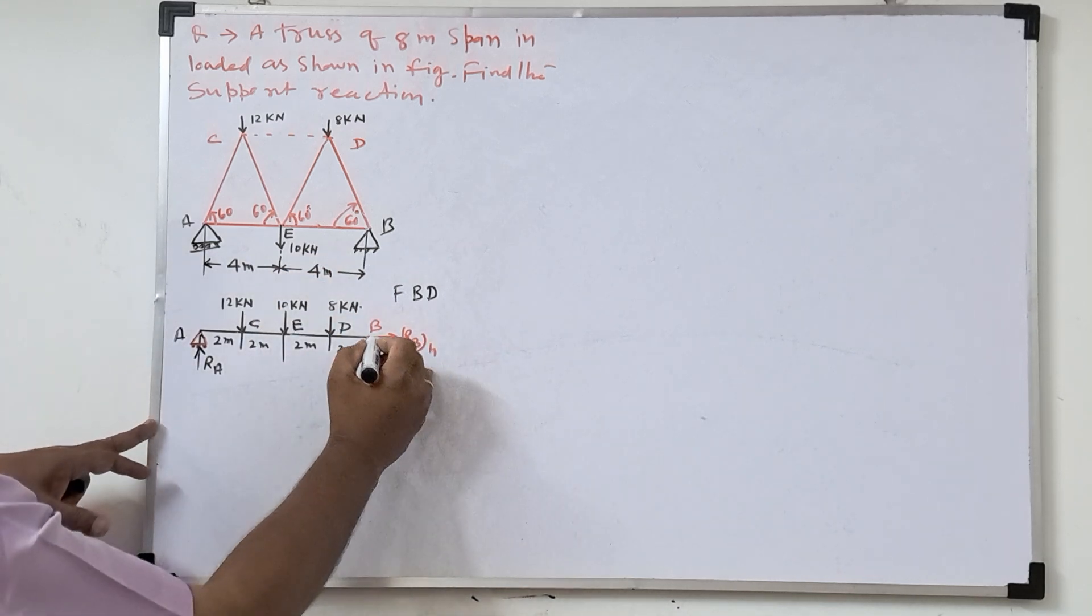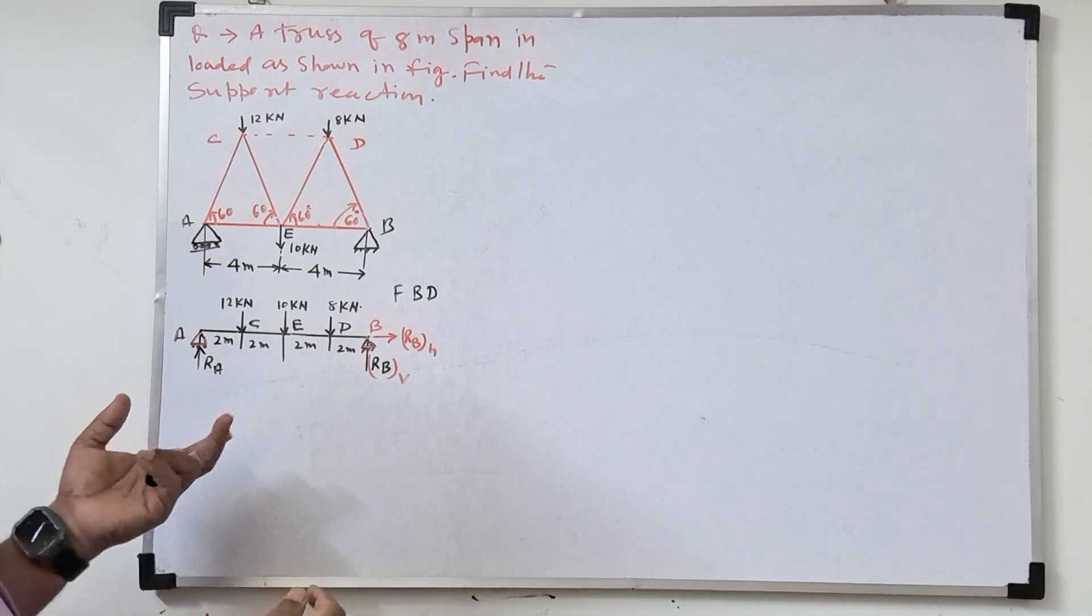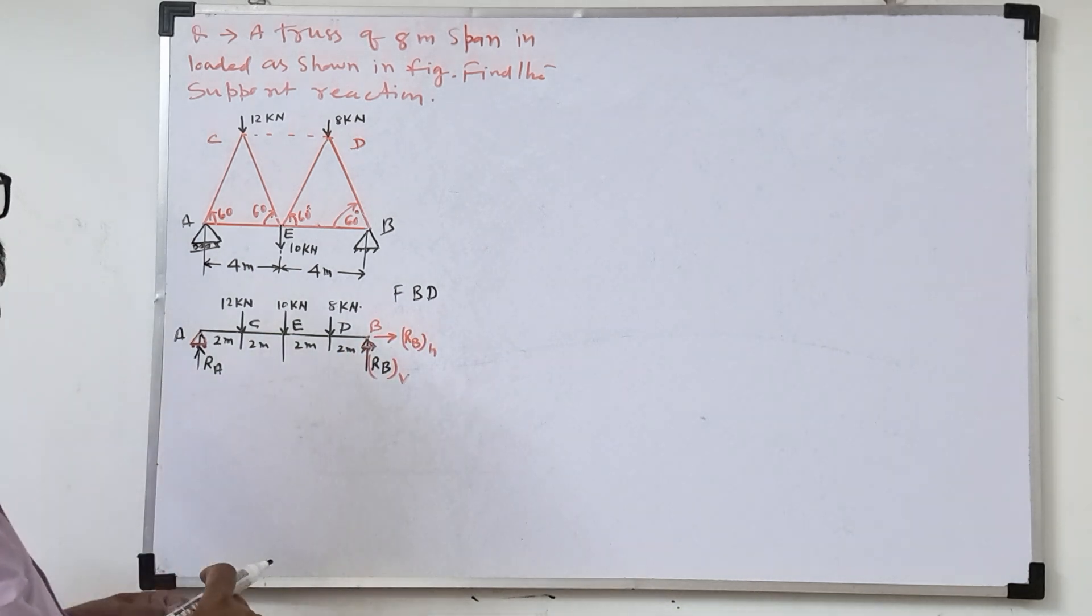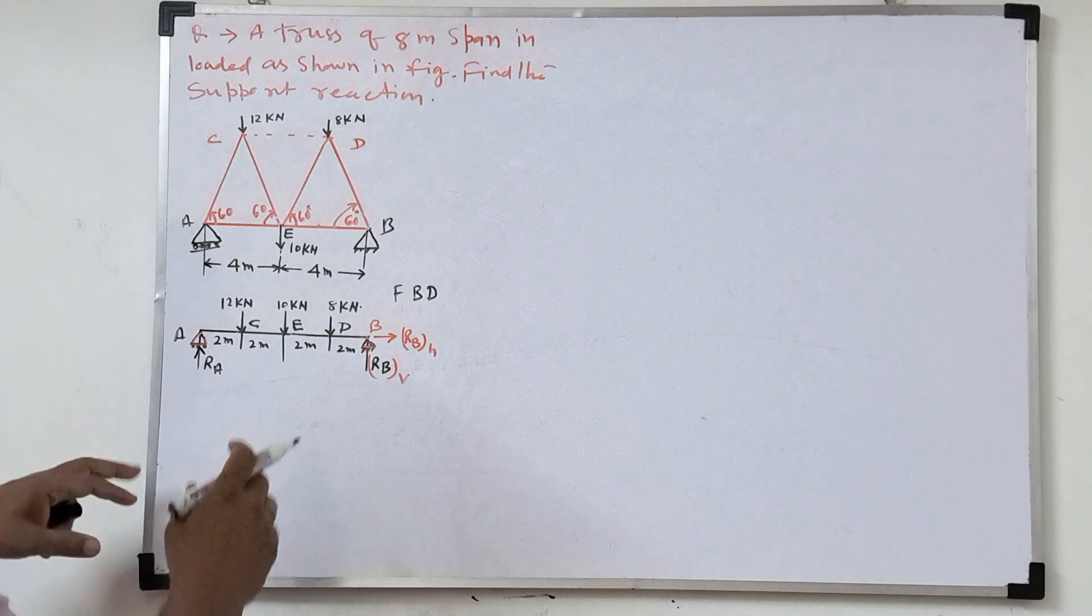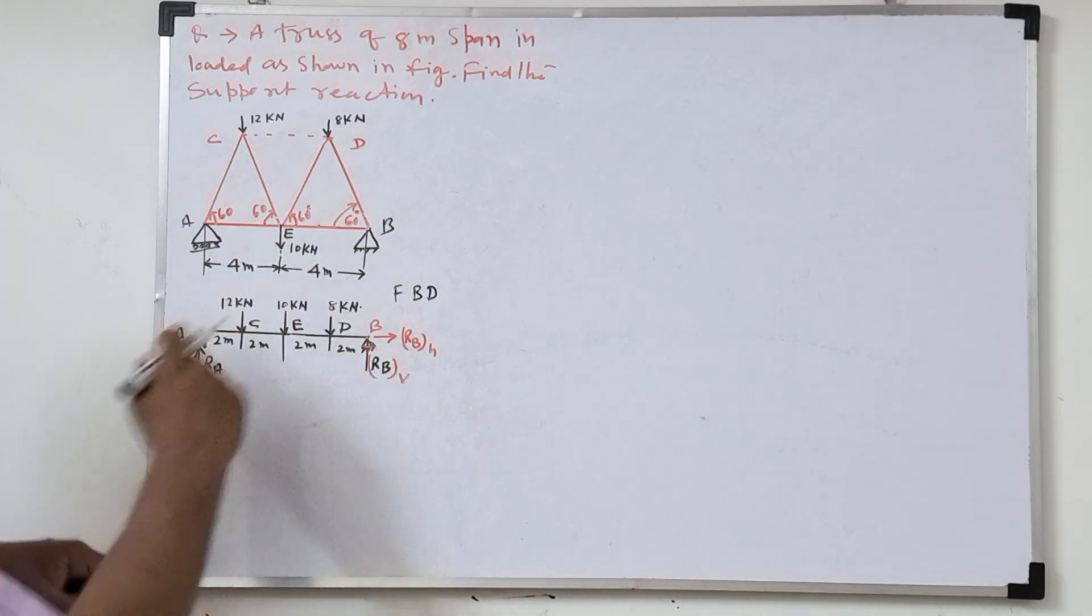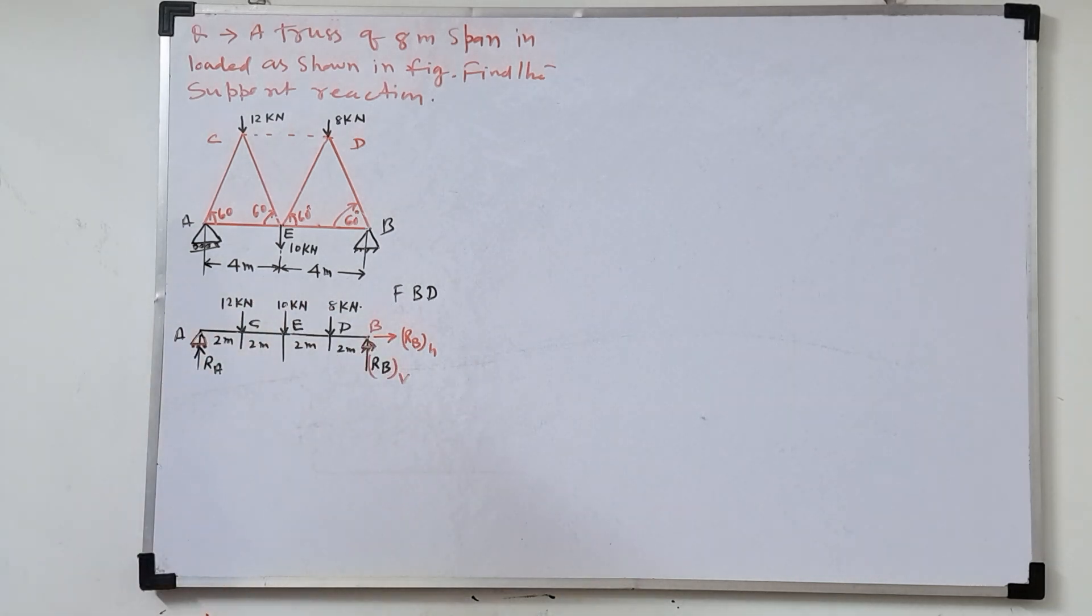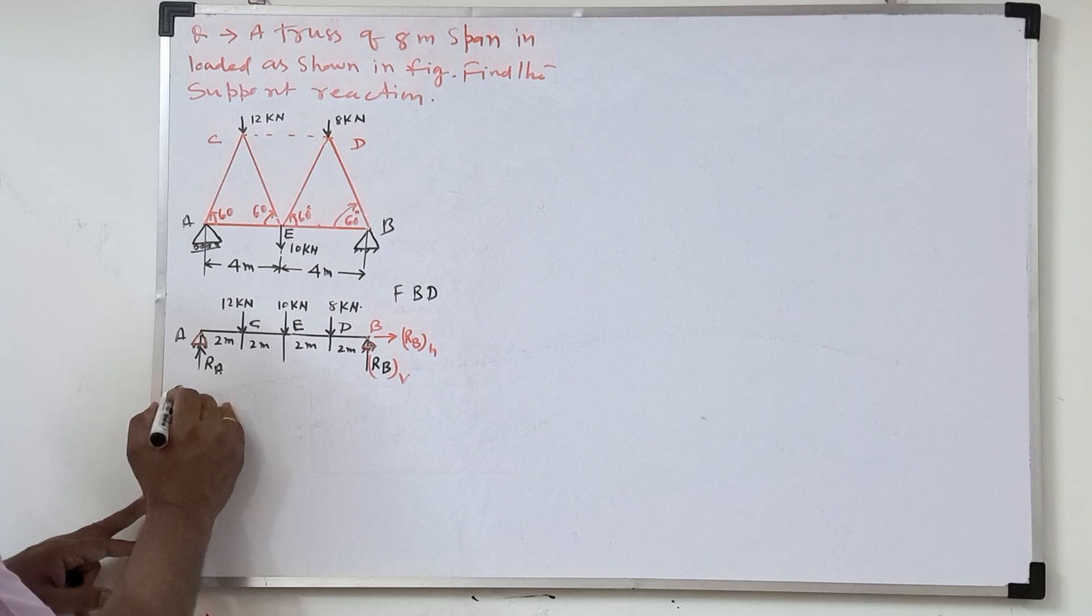So already we given the downward rightward direction. So we'll see what is coming, negative or positive. So what we have to do, find the support reactions and we'll calculate this load and all. So first we'll take the equilibrium equations.